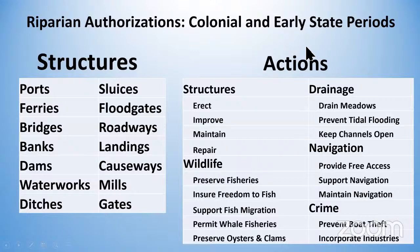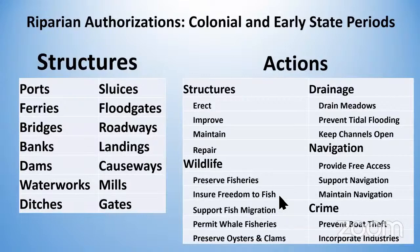If you were erecting, improving, maintaining, or repairing a structure, you had to get a permit. Preserving fisheries, ensuring freedom to fish, supporting migrations of fishes, whales, oysters, and clams — all required permission of the state. Drainage was a big deal: if you were draining a meadowland, preventing tidal flooding, all of these kinds of things were involved with permitting.